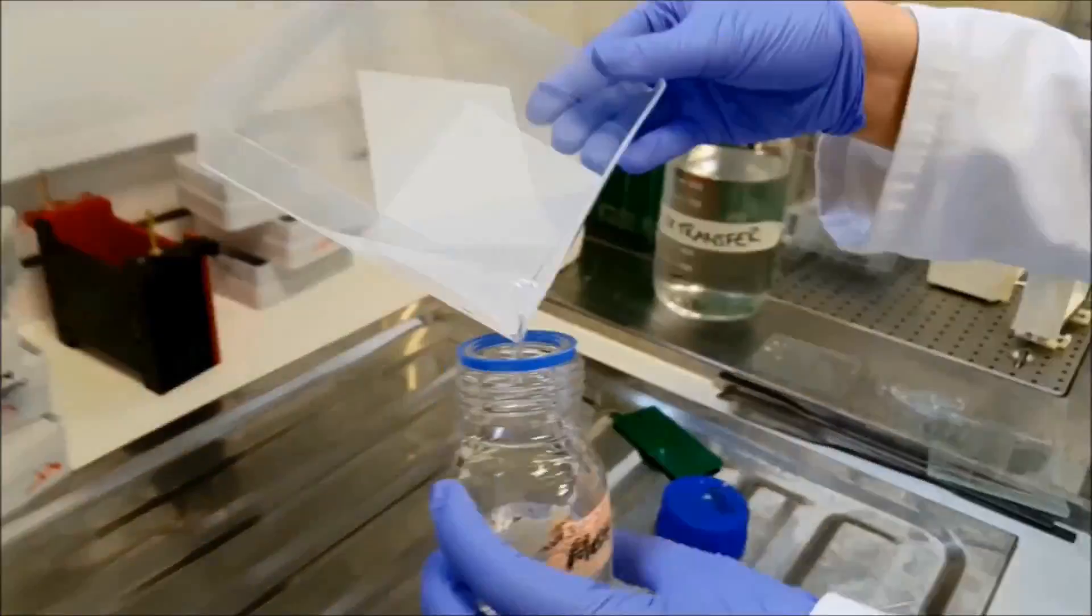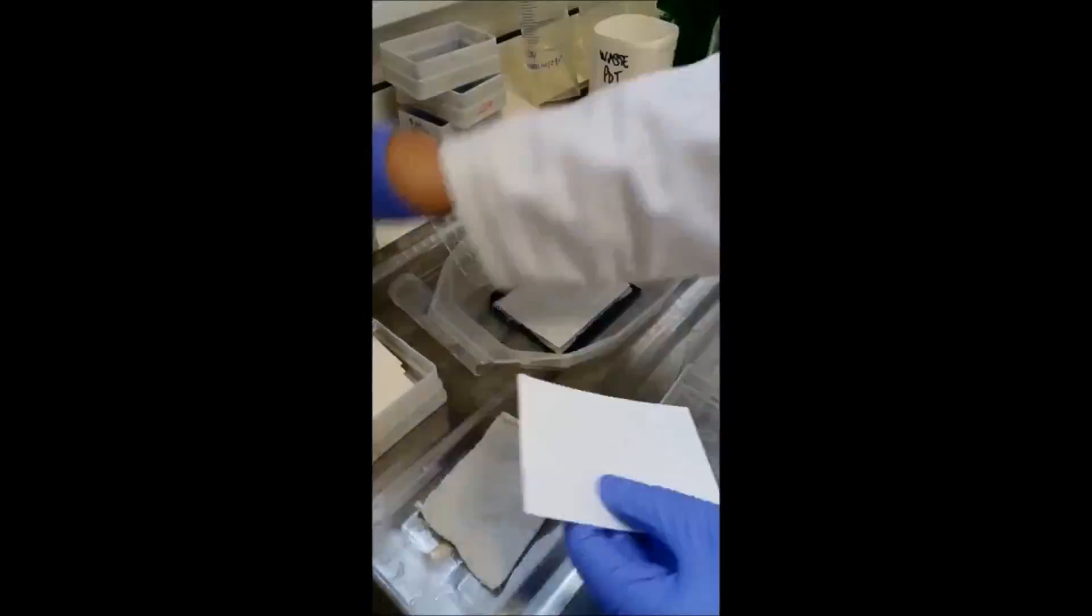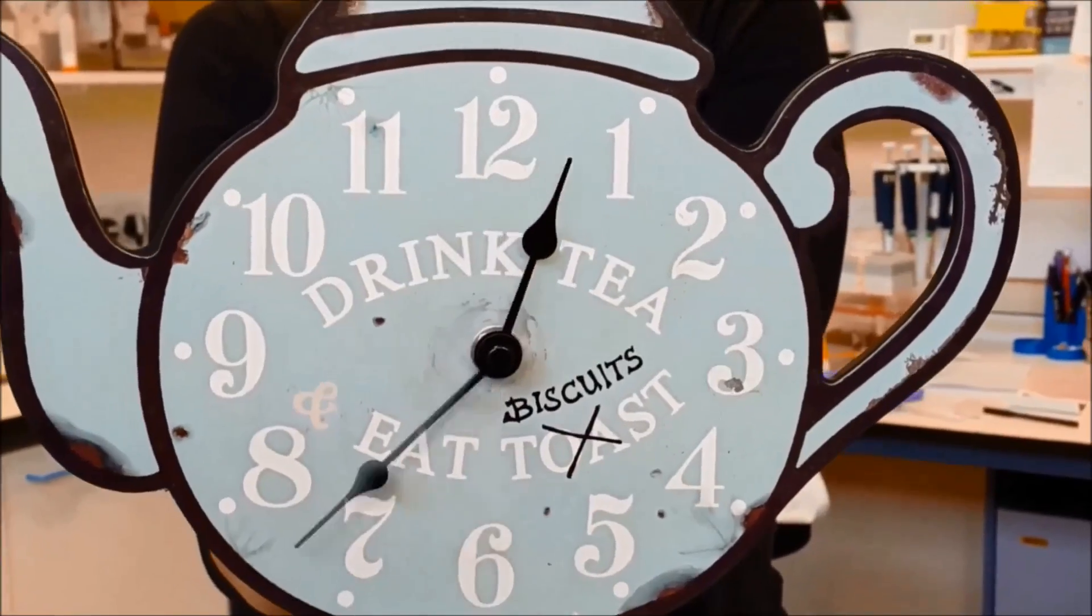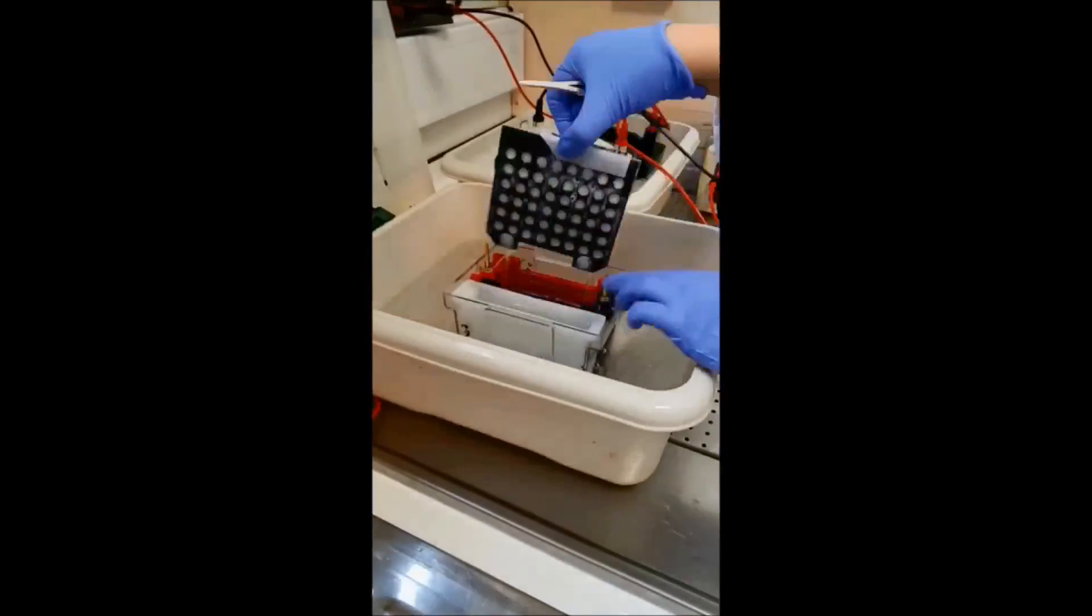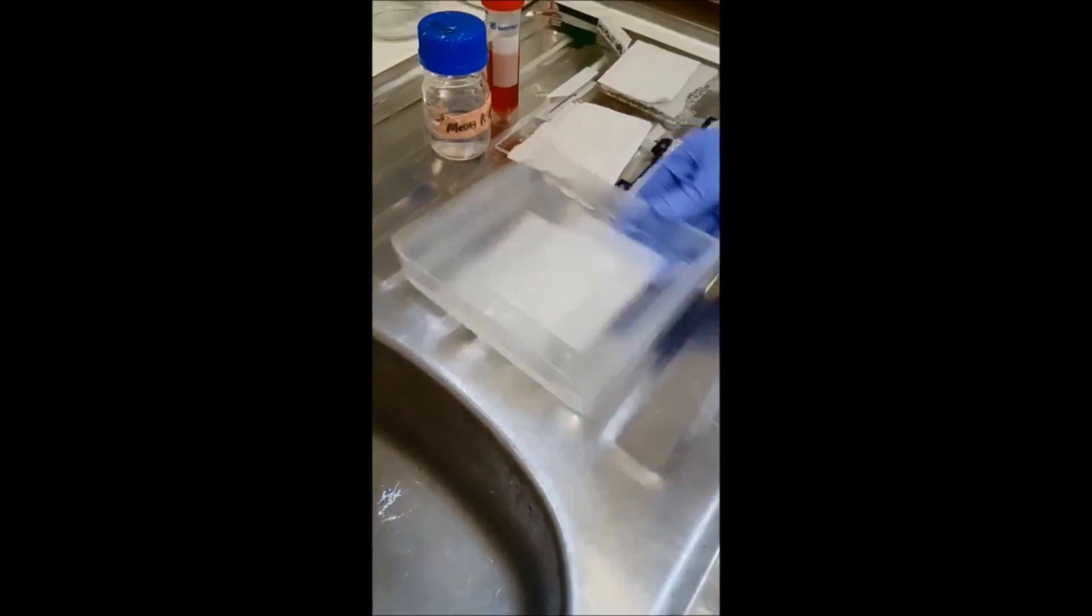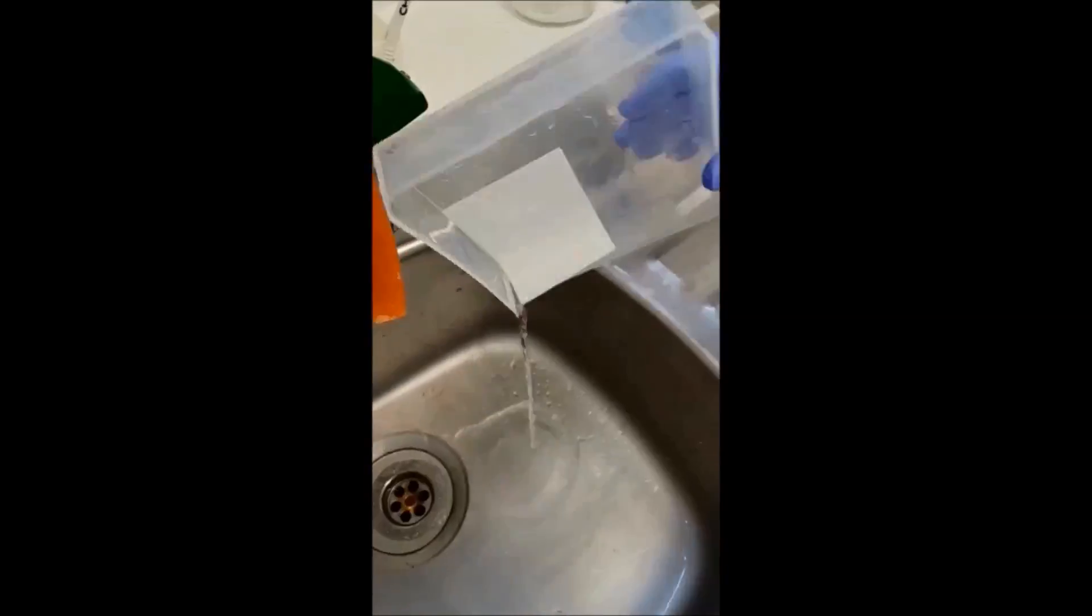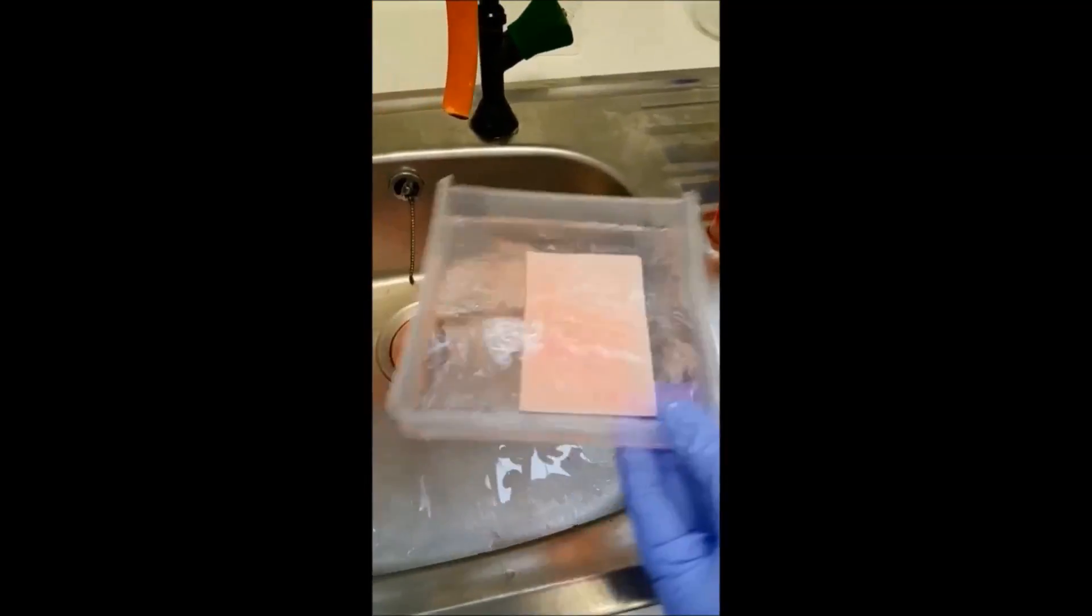The proteins are transferred onto a membrane again by passing an electric current through it. After a few hours, the protein is transferred from the gel onto a membrane. We then add a red dye so that we can see it and check that it has transferred properly. The red dye is then washed off, and the membrane is ready for the next step.